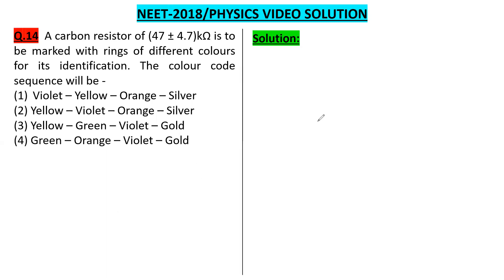This is a factual question. The resistance of a carbon resistor is 47 plus minus 4.7 kOhm. So I can write 47 into 10 to the power 3 plus minus 4.7 into 10 to the power 3 Ohm.